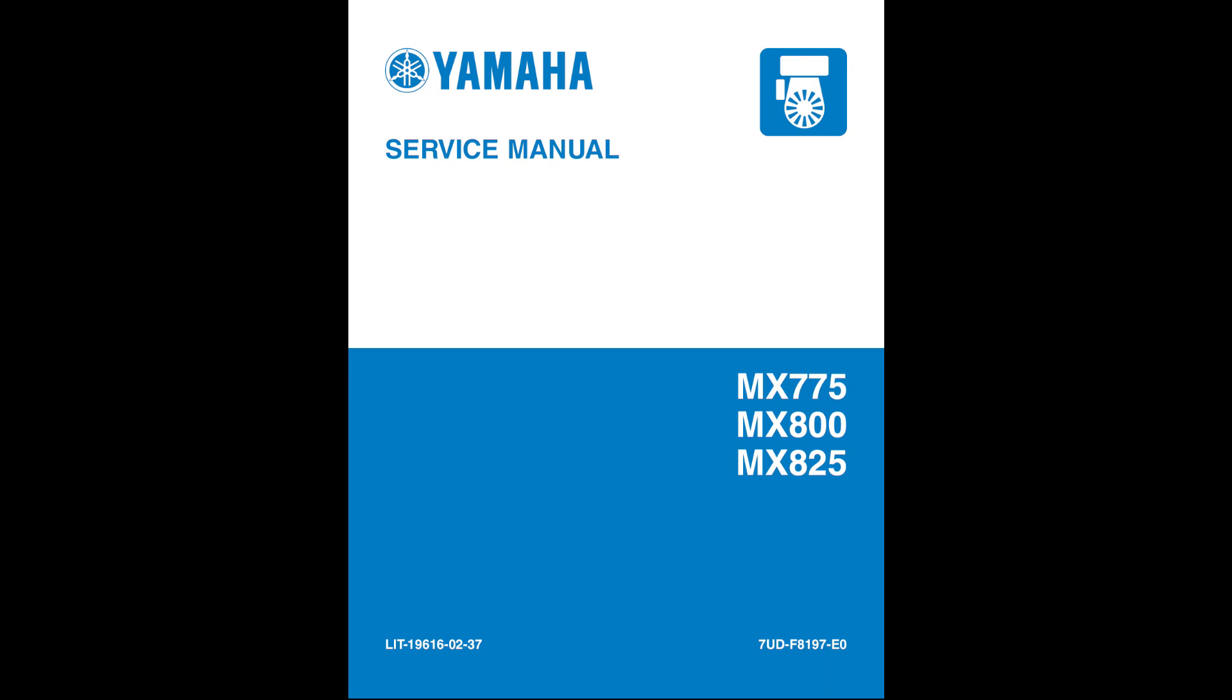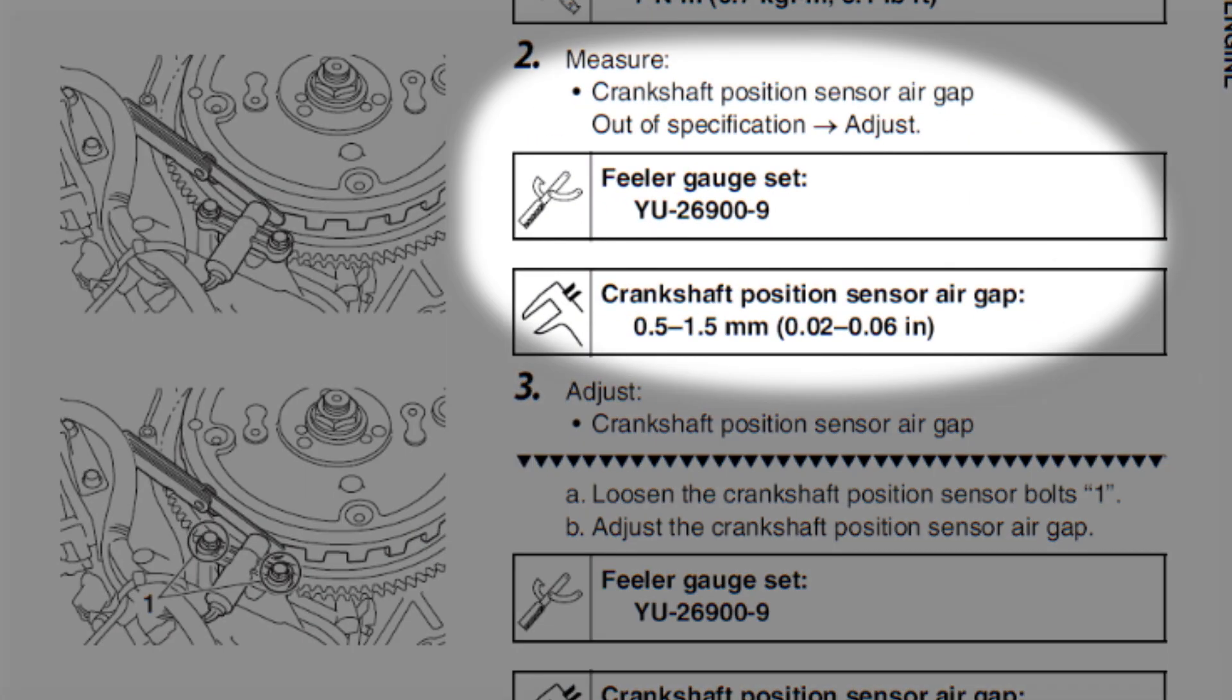The air gap spec is 20 to 60 thousandths of an inch. The best setting seems to be about 30 to 40 thousandths.